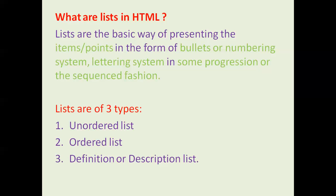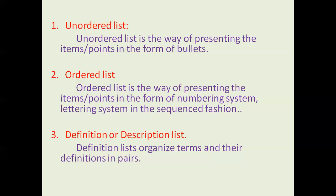Unordered list is a list that can be presented in the form of bullets — each and every point can be presented in the form of bullets or any graphics. But in HTML we can present the unordered list in the form of disk, square, or circle. These three types of graphics we can produce in HTML.